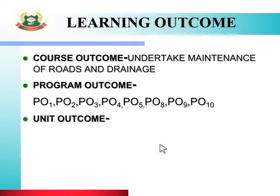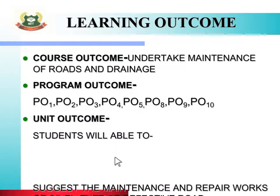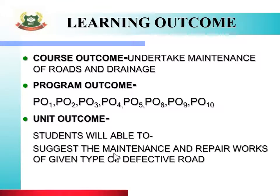Third hai Unit Outcome. Students will be able to suggest the maintenance and repair works of given type of defective road. Yeh topic padhne ke baad kisi bhi type ke defective road ke maintenance aur repair karne ke baare mein different methods aap bata sakte ho.